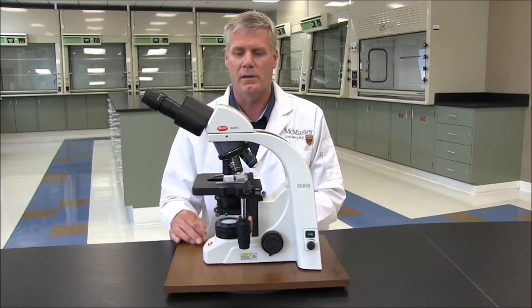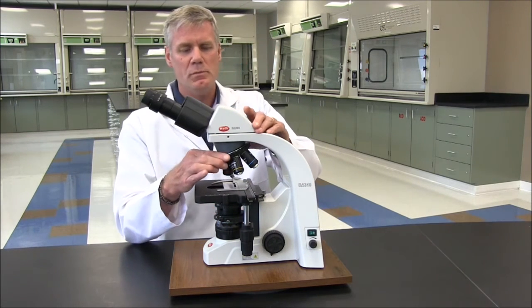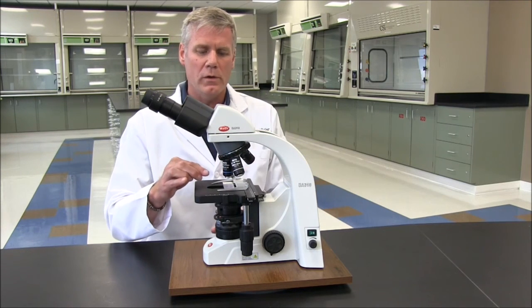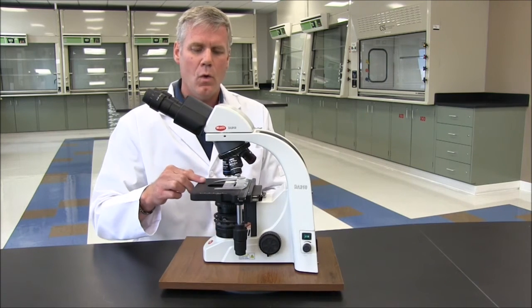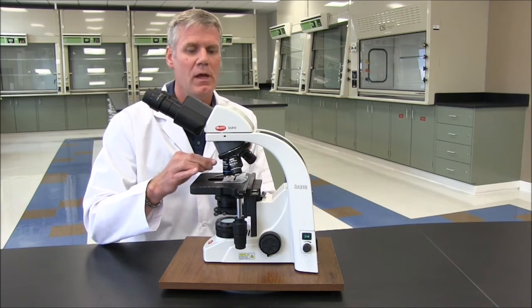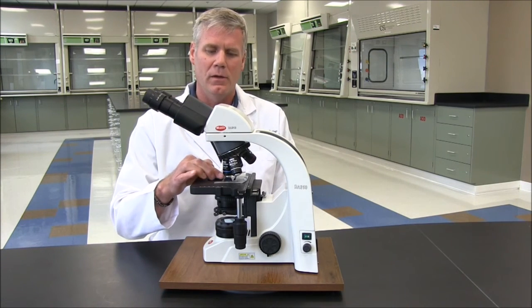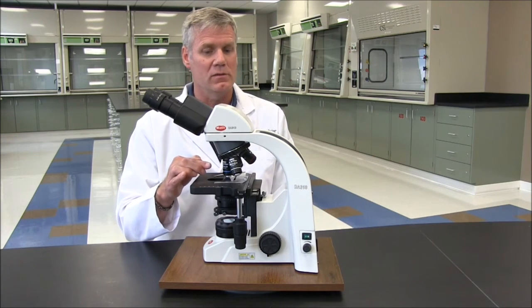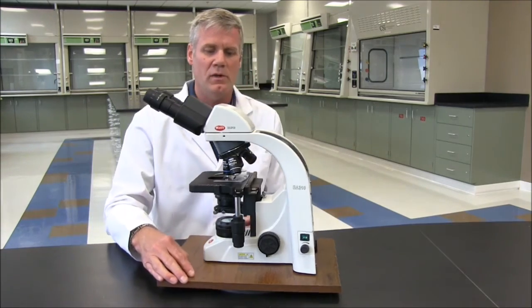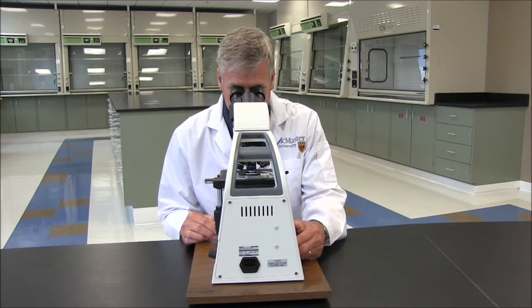When you're ready to view your slide, start by lowering the stage using the coarse adjustment to the lower limit. Use the revolving nose piece to rotate the objective that you want into place. In this case, we use the 40 times objective. While you're looking at the objective and the slide, raise the stage so that the glass slide is as close as possible to the objective, but not touching it. You want to do that while you're looking at it here and not through the eyepieces because you won't be able to tell how close the slide is getting to the objective, and you could end up cracking the slide or worse, scratching the lens on the objective. Once you have the slide as close as possible, you can look down the eyepieces and lower the stage until the specimen comes into focus.